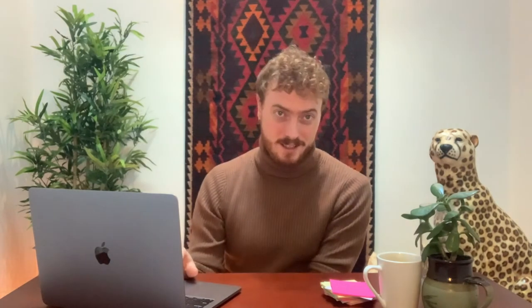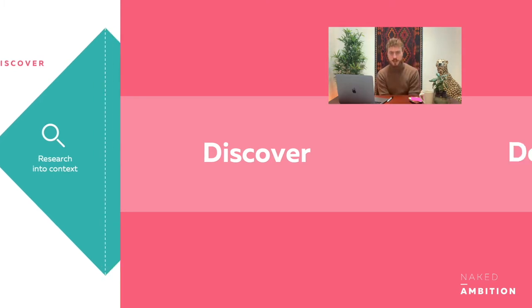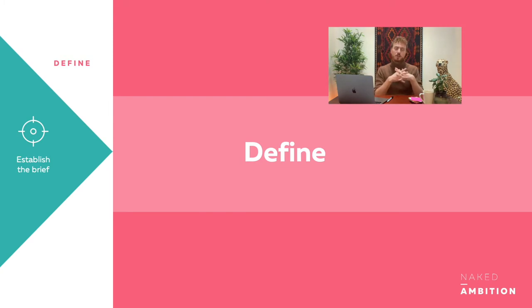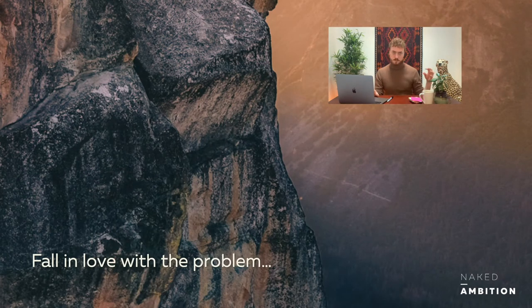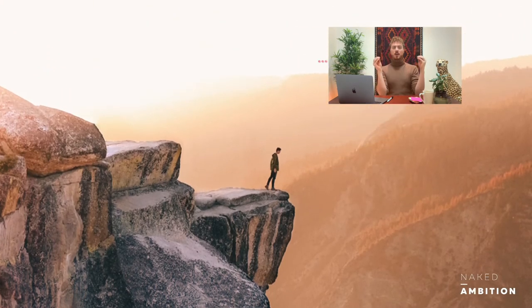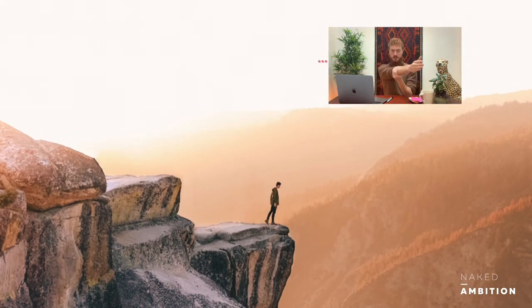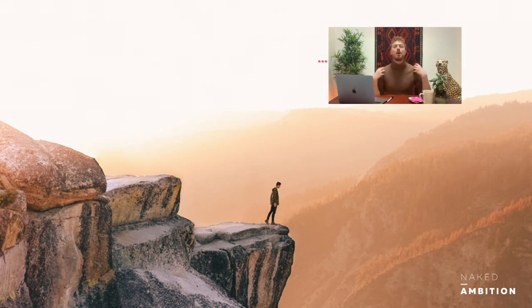That was the discover phase. Now we continue to the define phase. As you can see in the double diamond, define closes the first diamond — it converges your thinking. We have all this information and now we're going to make sense of it. Be careful — we're still falling in love with the problem, not with the solution. This is often the hardest moment in the design thinking process, because we are defining a direction without knowing where we're actually going. We don't know the destination; we just define direction. We define the problem we have and what we want to solve for, but we don't necessarily know the solution yet.